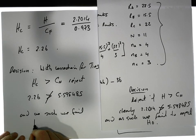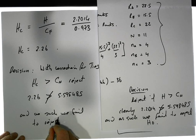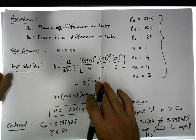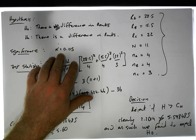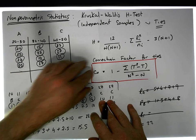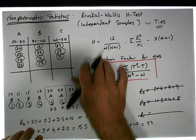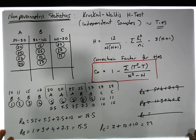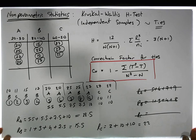We fail to reject H₀. So there's still no evidence, even with the correction, to suggest that there's a difference in the ranks across those three groups. This was Jonathan Lambert with the Mathematics Development and Support Service at the National College of Ireland. I hope this video was intuitive and helpful. Thanks for watching.